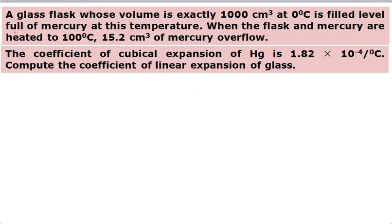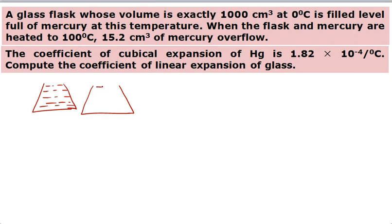Next question: a glass flask whose volume is exactly 1000 cm³ at 0°C is filled level full of mercury at this temperature. When the flask and mercury are heated to 200°C, 15.2 cm³ of mercury overflows. The coefficient of cubical expansion of mercury is given and we have to calculate the coefficient of linear expansion of glass. The flask is filled brim-full, heated, and some mercury spills out.